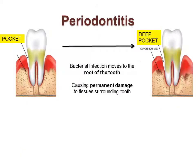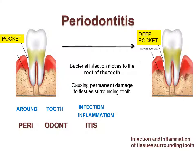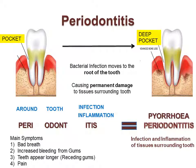Bacterial infection then moves to the root of the tooth, ultimately causing permanent damage to the tissues surrounding the tooth. Since it is around the tooth, we use the prefix 'peri,' meaning around, and tooth is also called 'odont.' Infection and inflammation of the tissues surrounding the tooth is known as periodontitis. Another word for periodontitis is pyria. Main symptoms of pyria are bad breath, increased bleeding, teeth appearing longer due to receding gums, and pain.